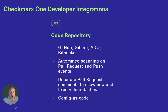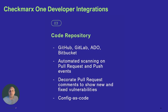This integration allows for automated scanning on specific events in the code repositories. We create webhooks on pull requests and push events, so whenever a developer creates a PR or pushes into their main branch, Checkmarx will initiate a scan using all the engines configured.